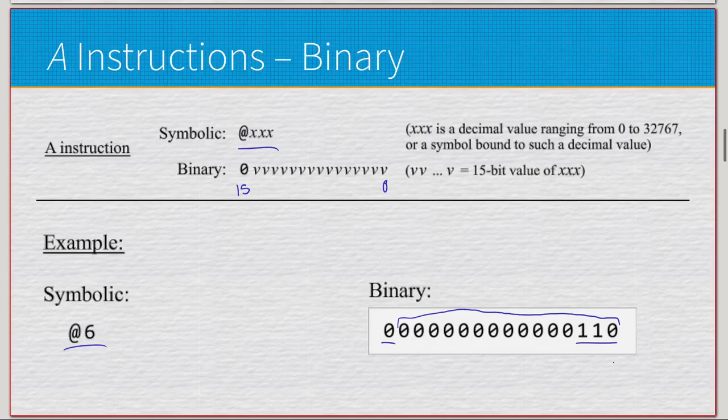That'd be 110, and then you pad out the rest of it with zeros. And that's essentially all the A instructions are. Just the most significant bit 15, the remaining 15 bits are going to be some 15-bit value in binary. That's about it.